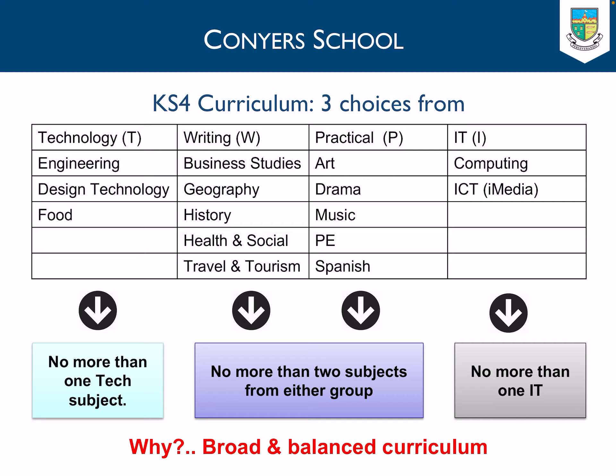In terms of the Key Stage 4 curriculum at Conyers, we give students the opportunity to choose a broad range of subjects. As well as studying the core curriculum, students choose three options subjects, and we put these into blocks: technology, writing, practical, and IT. This ensures a broad and balanced curriculum, meaning students can choose no more than one technology subject, no more than two writing subjects, no more than two practical subjects, and no more than one IT subject.